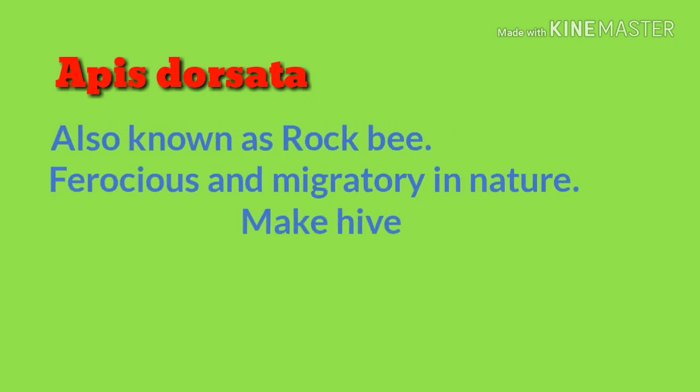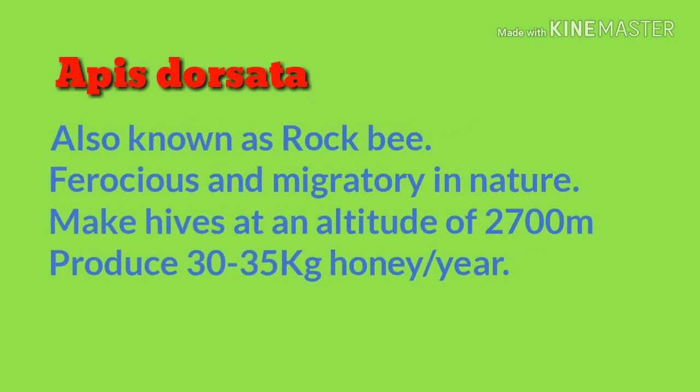Apis doceta, also known as rock bee, is the largest in size among all honey bee species. It generally lives in sub-mountainous regions above an altitude of 2700 meters. Rock bee is ferocious and migratory in nature — they react very violently even to minimal disturbances and very often abandon their hives. Due to their ferocious and migratory nature, they are difficult to rear.